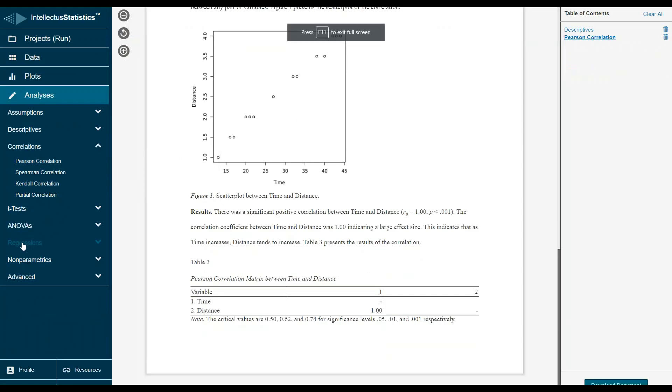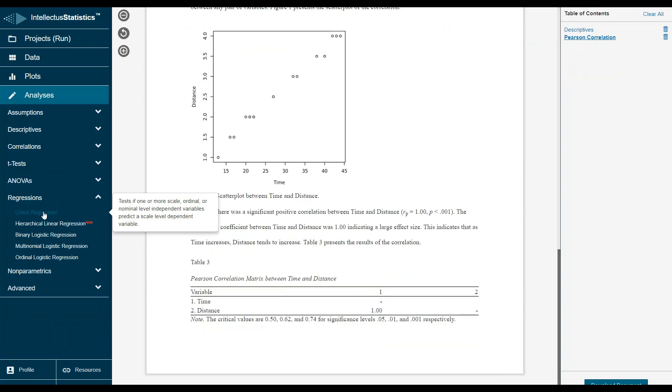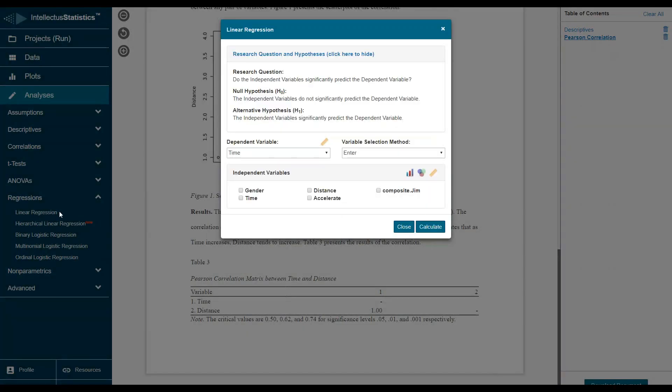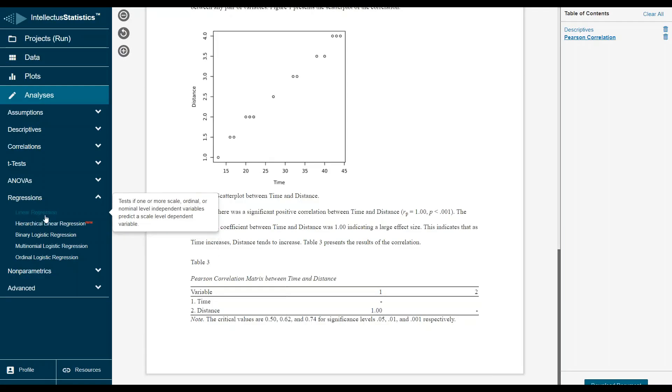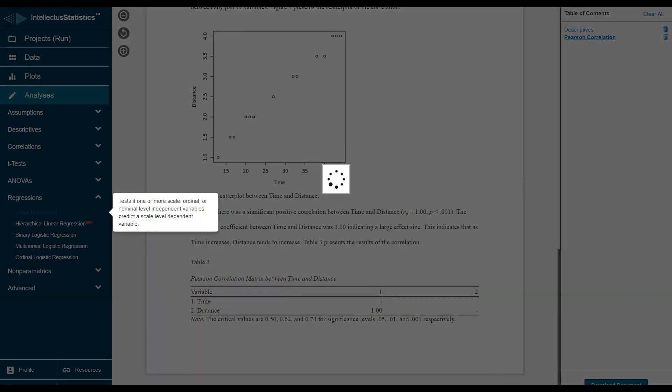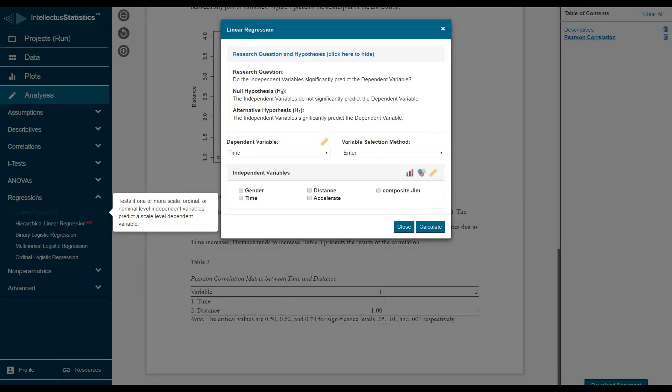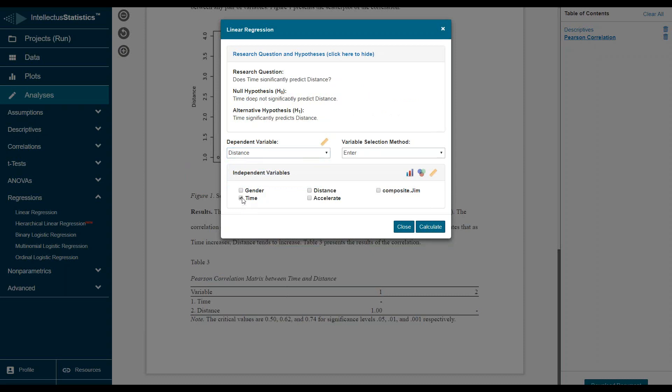Alright, so let's go ahead and conduct a regression. Now let's conduct a linear regression. By the way, when you scroll over these, it kind of tells you what that test does, so just a reminder. Here's our DV distance, let's use time as a predictor, and let's put gender as a predictor.